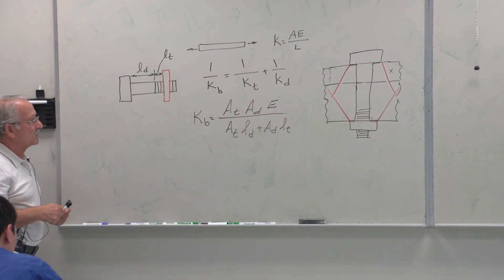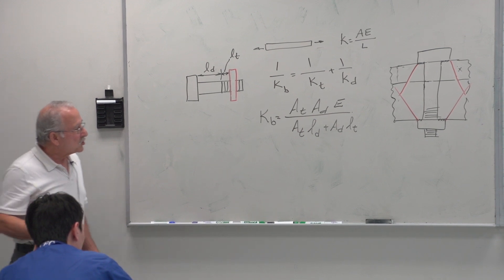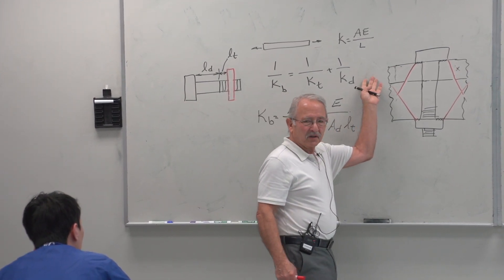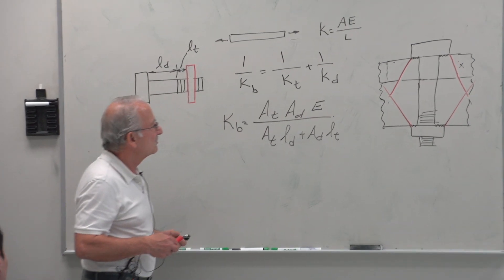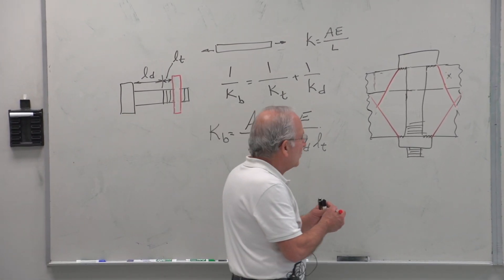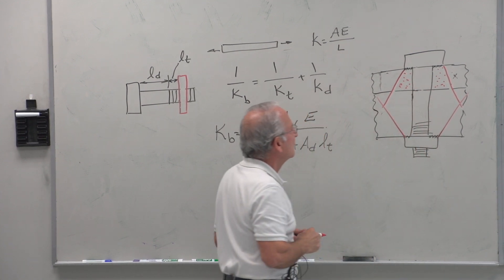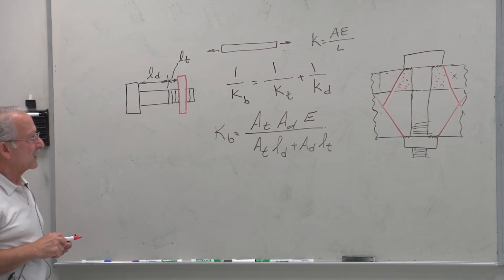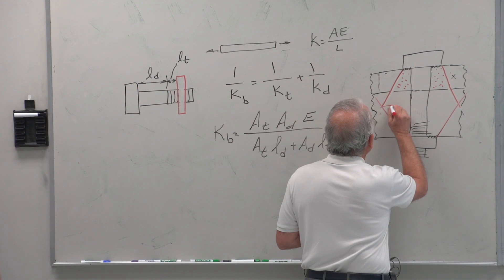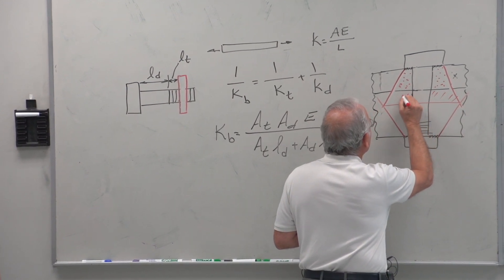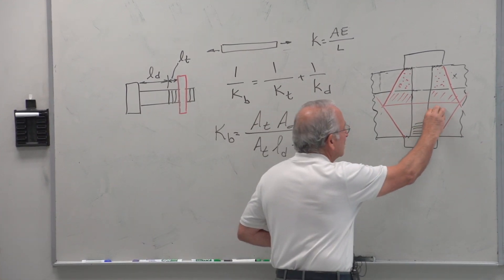Assuming these two members are not of the same material — taking the general case — we see one trapezoid (truncated cone) in the top member and then in the lower material another one, and then a third one. This is the path through which the load is assumed to be transferred from the underside of the bolt head to the top of the nut, spreading out somewhat.